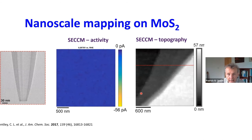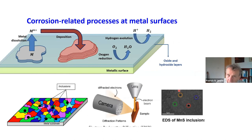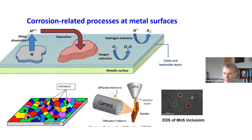We've been looking at corrosion-related processes in the group recently. The correlative technique we use is SEM with electron backscatter diffraction to reveal the surface crystallography, and EDS to determine variations in chemistry and identify inclusions such as manganese sulfide inclusions. We've been doing work looking at anodic dissolution and cathodic processes which drive the corrosion reaction.